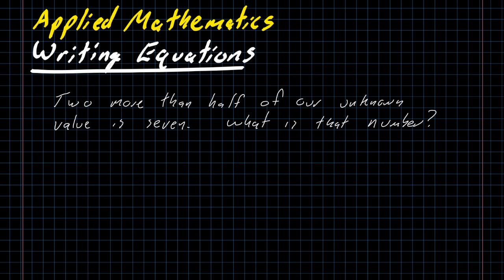A very basic example might tell us that two more than half of our unknown value is seven. What is that number?